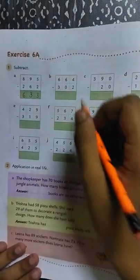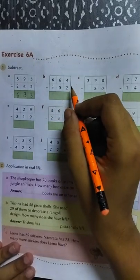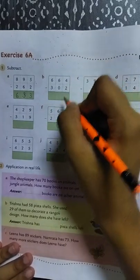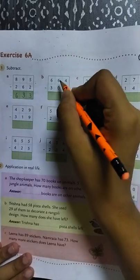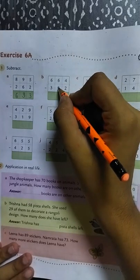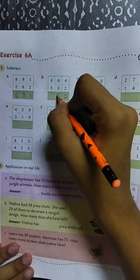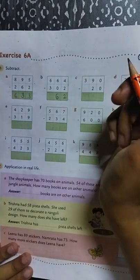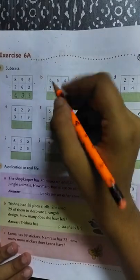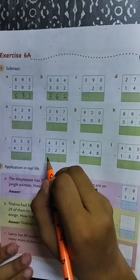Now look at the next question: 664 minus 302. We will start from the one's place. 4 minus 2 is 2. 6 minus 0. Any number subtracted from, if we subtract 0, the answer will be the same number. 6 minus 3 is 3. So the answer is 362.